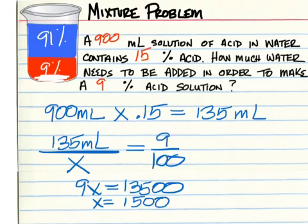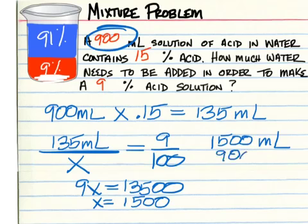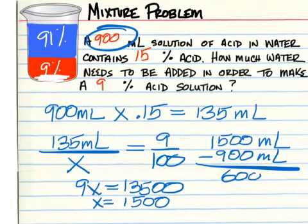So the new contents of your container, the total amount of contents, acid and water combined, will be 1,500 milliliters. We started with 900 milliliters. So you subtract to find out the difference, and that would be 600 milliliters.